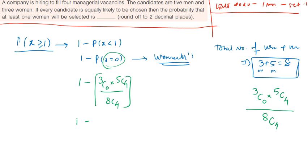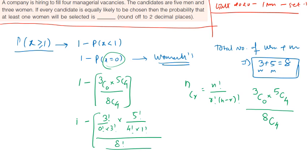This becomes 1 minus, 3 factorial over 0 factorial into 3 factorial. If you know that nCr equals n factorial over r factorial times n minus r factorial, into 5 factorial over 4 factorial times 1 factorial, divided by 8 factorial over 4 factorial into 4 factorial.